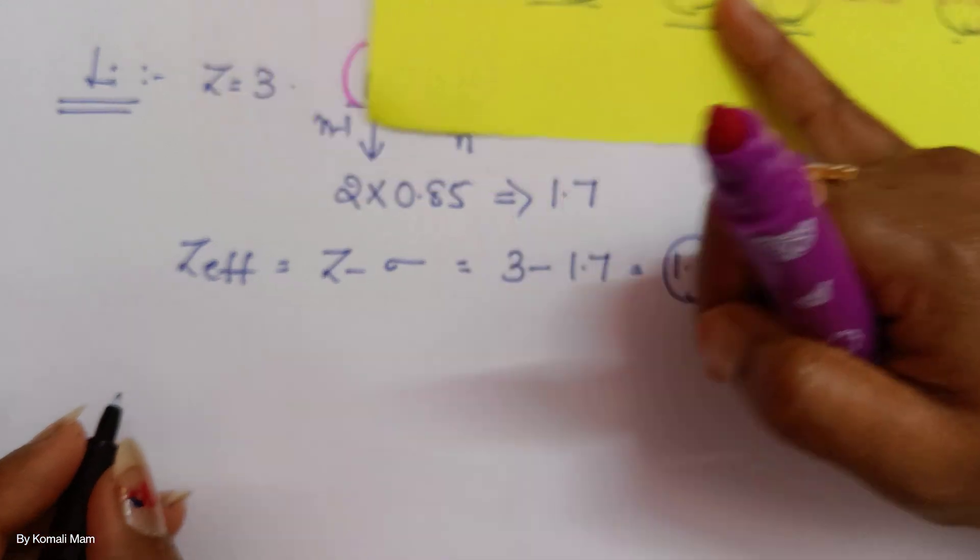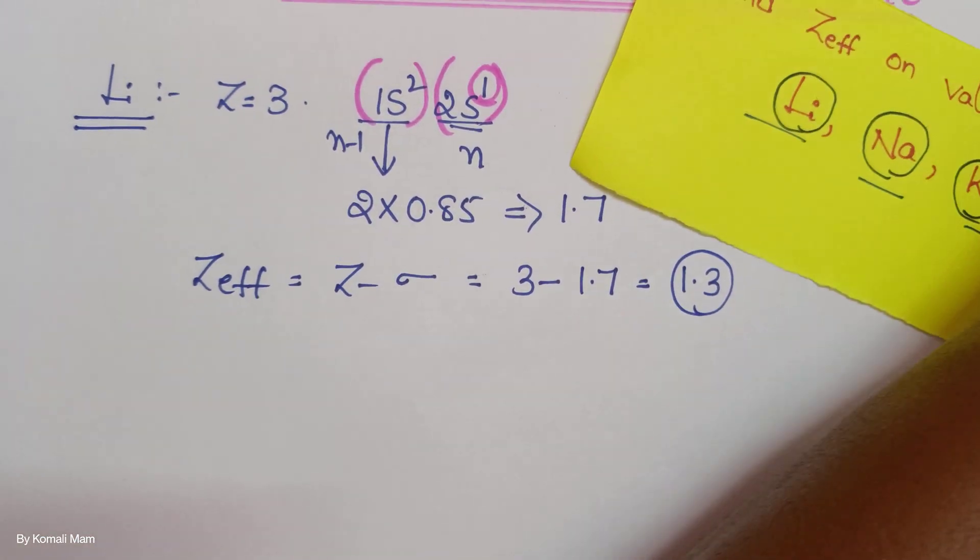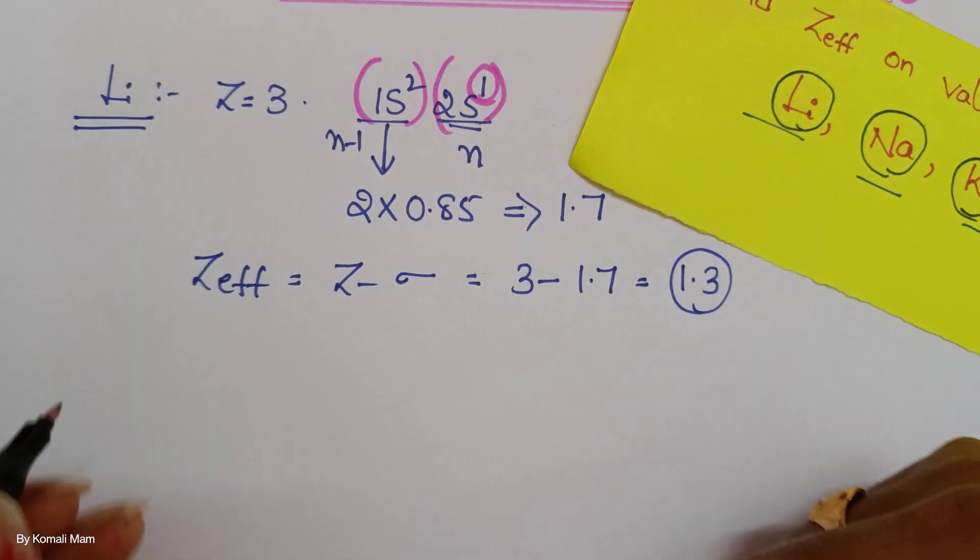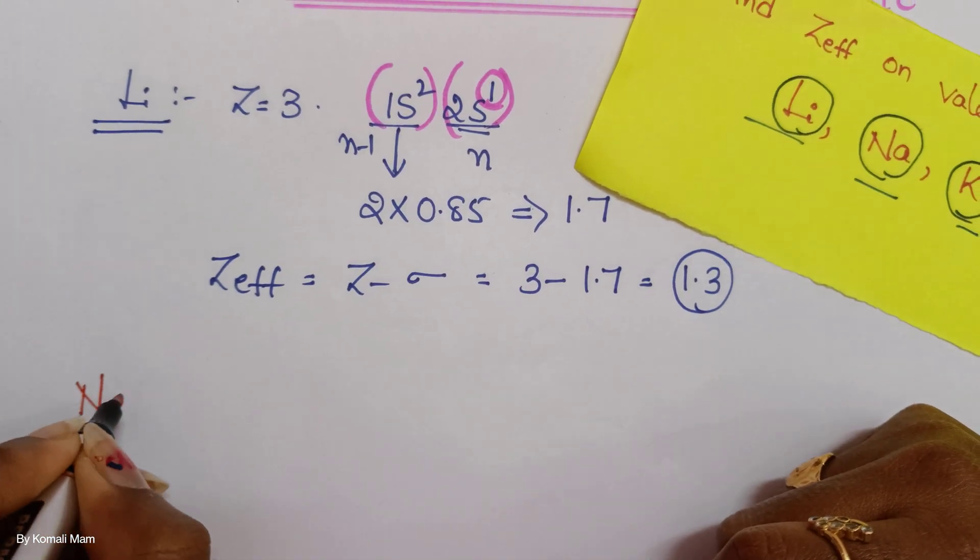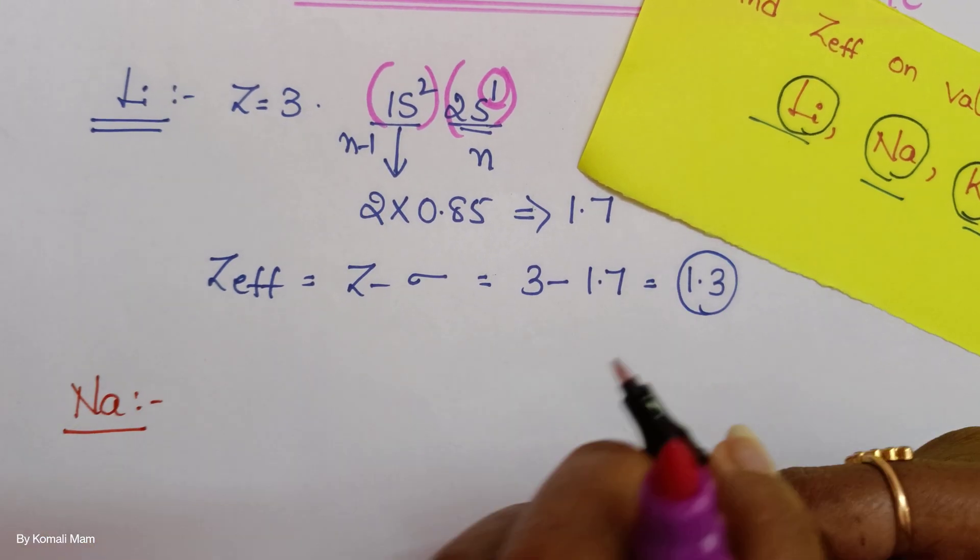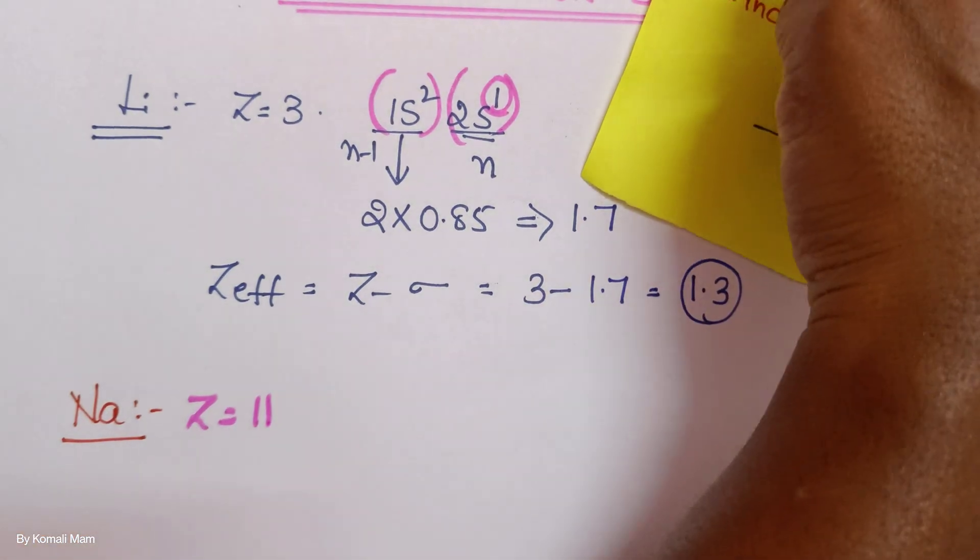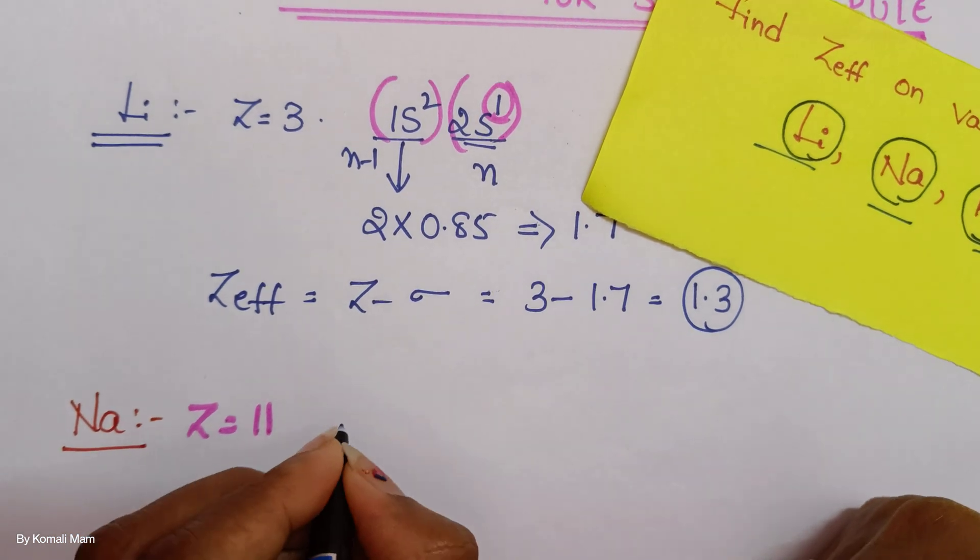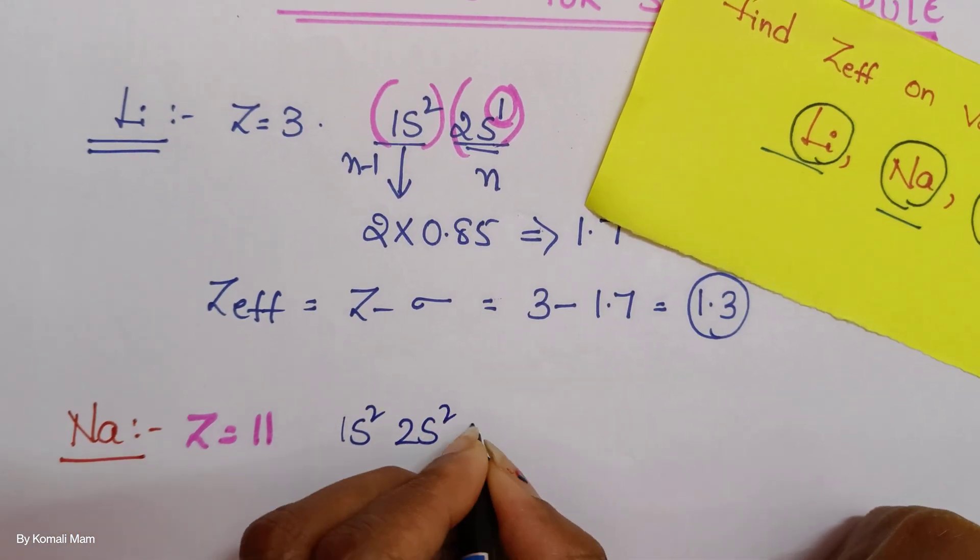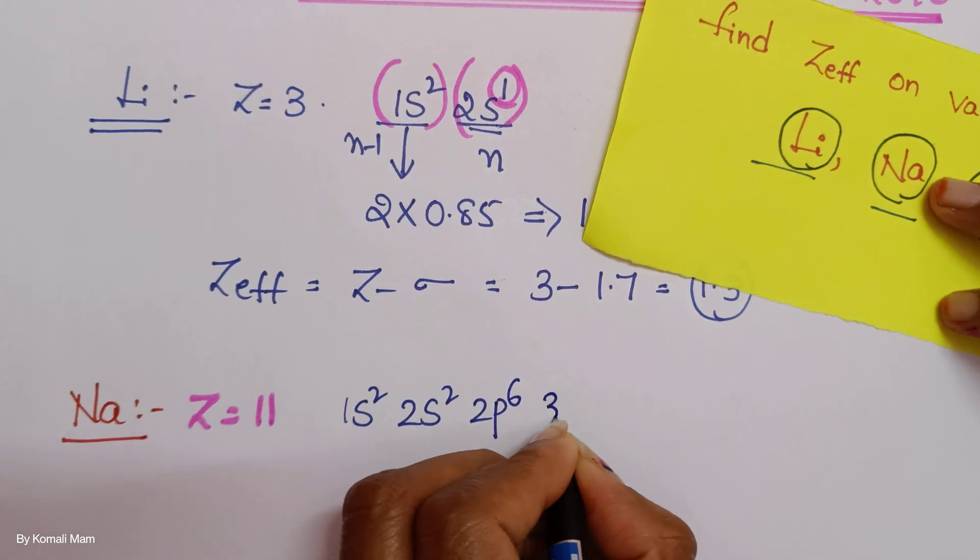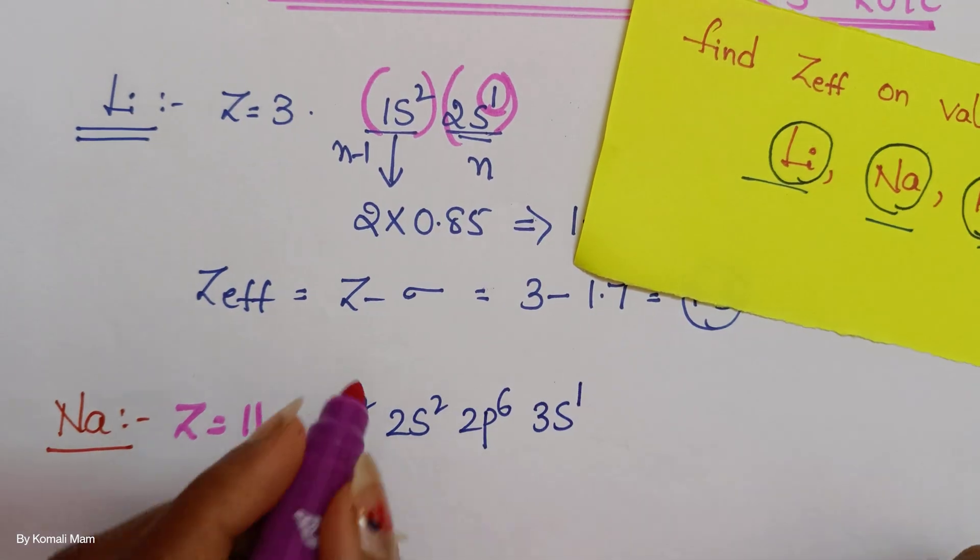Now the next question is sodium, right? What is the atomic number of sodium? 11. Then how to count now? First write the electronic configuration. 1s2, 2s2, 2p6, 3s1. Then group it now.